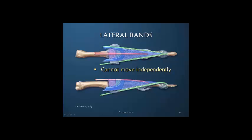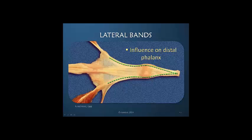No wonder a minor injury to the dorsum of the finger can wreak havoc with the balance of motion, because this entire system is a rather thin, flat system curving around the dorsum of the finger and sitting directly on the periosteum of the bone. Here we see a schematic representation of the force of the lateral bands moving out to the terminal tendon insertion, again showing both interosseous and lumbrical contributions radially and interosseous contribution ulnarly.